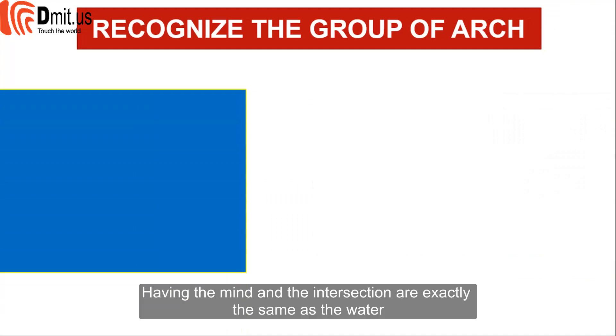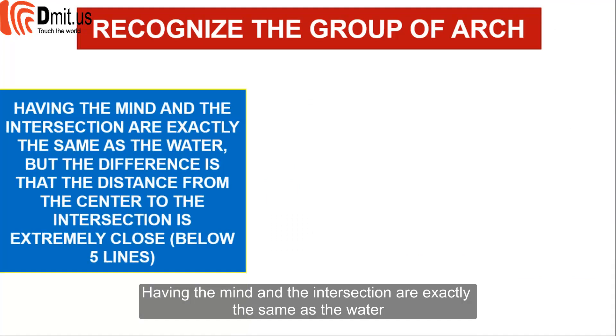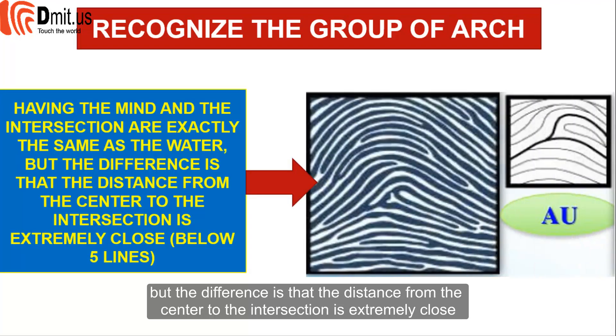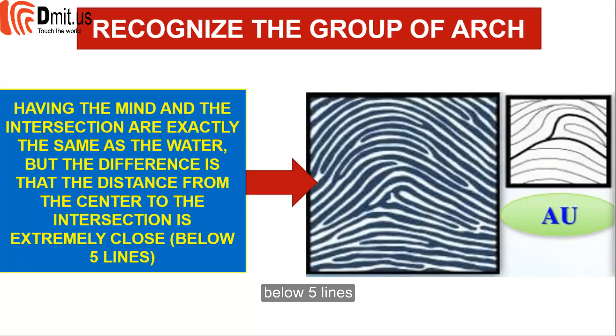Having a center and intersection that are exactly the same as the water pattern, but the difference is that the distance from the center to the intersection is extremely close — below 5 lines. This is called AU.